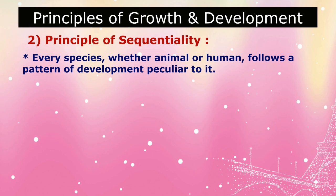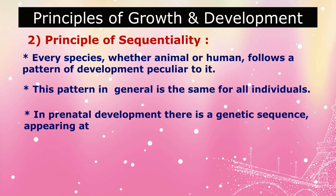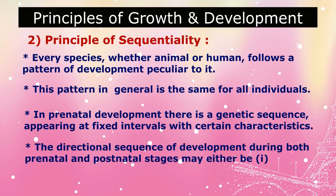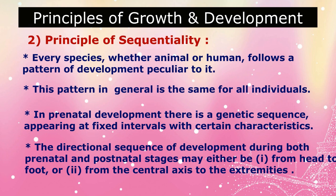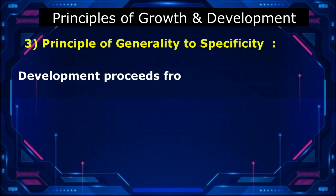2. Principle of Sequentiality: Every species, whether animal or human, follows a pattern of development peculiar to it. This pattern in general is the same for all individuals. In prenatal development, there is a genetic sequence appearing at fixed intervals with certain characteristics. The directional sequence of development during both prenatal and postnatal stages may either be from head to foot, or from the central axis to the extremities.